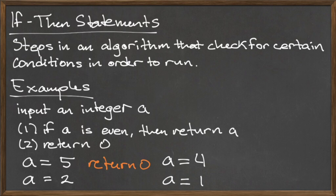Now let's run the algorithm again with the input a equals two. The first step is to check if a is even. Two is even, so the instructions to return a are followed, and our program immediately terminates with the output two.